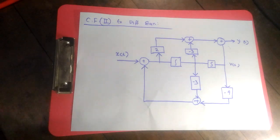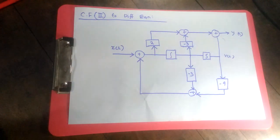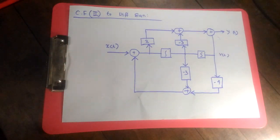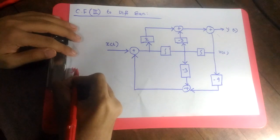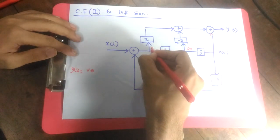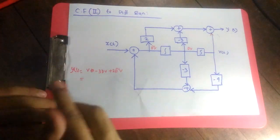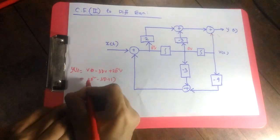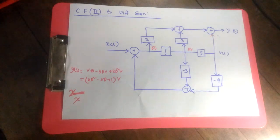This is our Canonical Form 2 — we produce the derivatives first without worrying about which terms are needed, then multiply, add, and produce y and x according to our equations. This is easier than Canonical Form 1. Now we're going to go in reverse: from Canonical Form 2 back to a differential equation. Given a canonical form diagram, we make the equation for y(t) first.